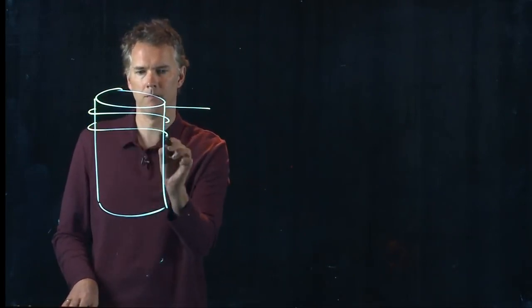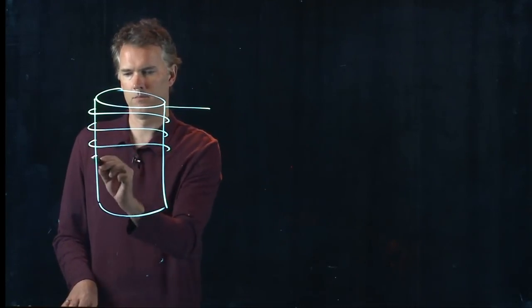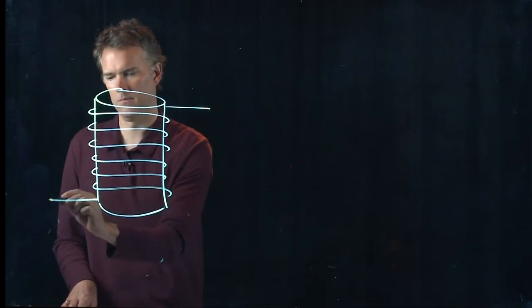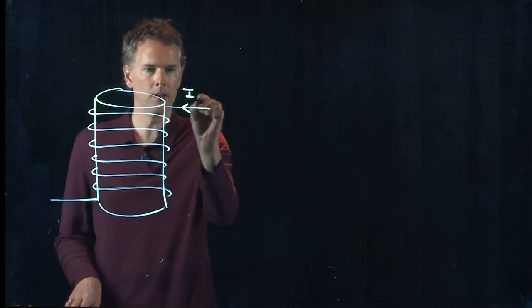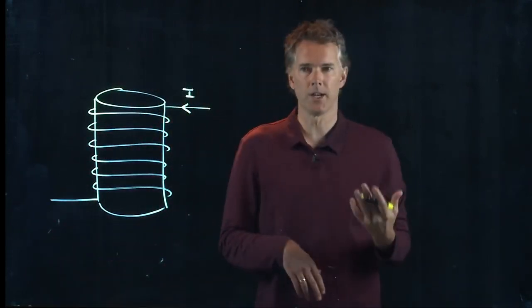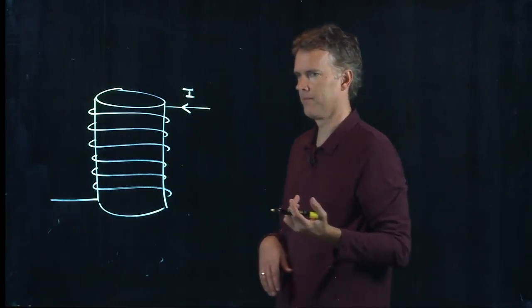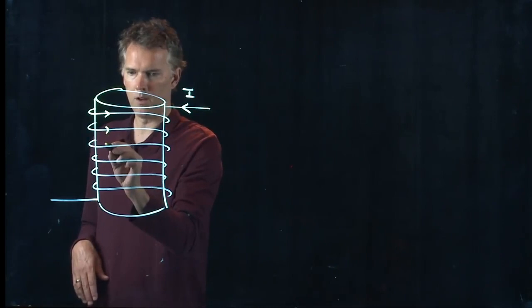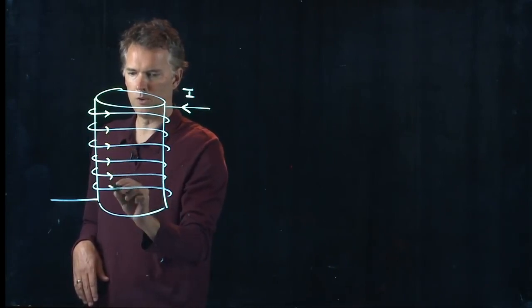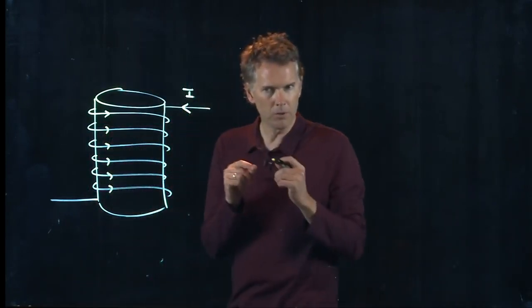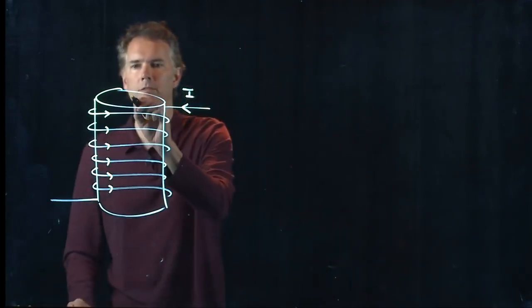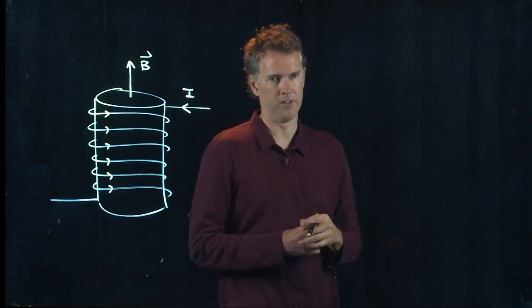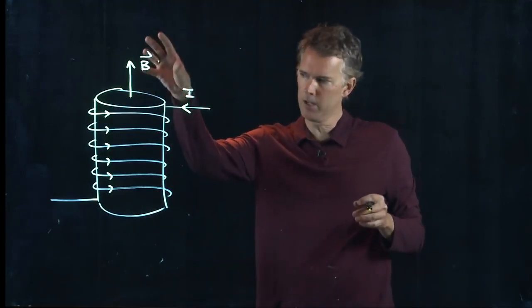And you run current I through it, you're gonna generate a B field. Okay, the current I is coming around like this on each one, which is the same as our little loops that we just drew. And so the B field is in fact coming right out the top of this device and it's strong.